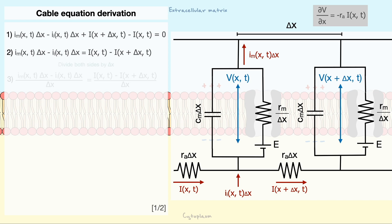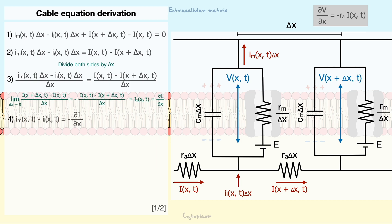Next, we can rearrange the similar terms that are multiplied by delta x together. Here again, we can divide both sides by delta x, which gives us an expression very similar to the partial derivative of the current with respect to position if we take the limit of delta x to zero. This, as a result, gives us that the membrane current leaking out minus the injected current is equal to the negative partial derivative of our current with respect to position.